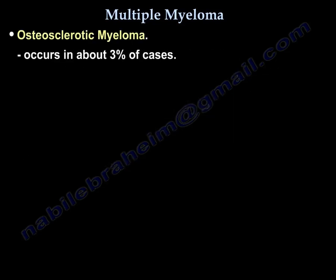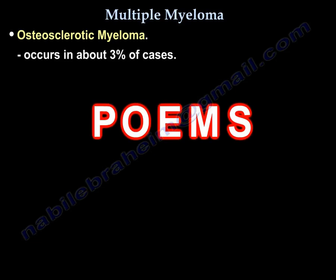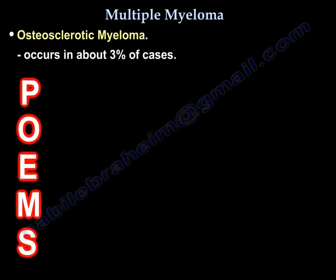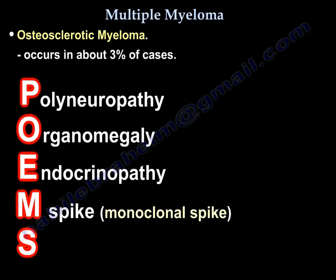Osteosclerotic myeloma occurs in about 3% of myeloma cases. You can use the mnemonic POEMS: P for polyneuropathy, O for organomegaly, E for endocrinopathy, M for M-spike, and S for skin changes.